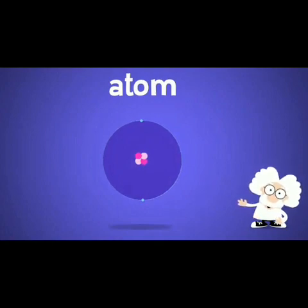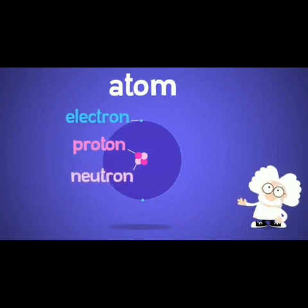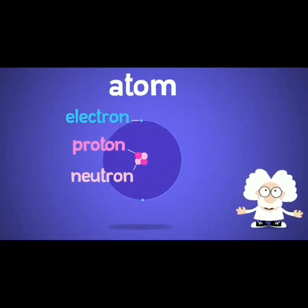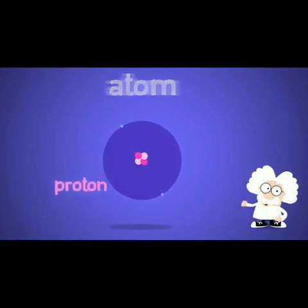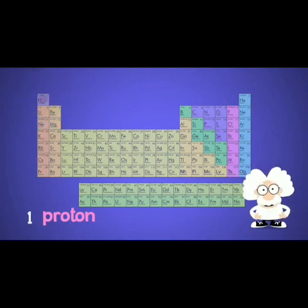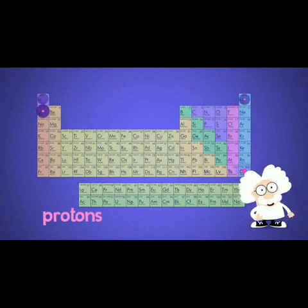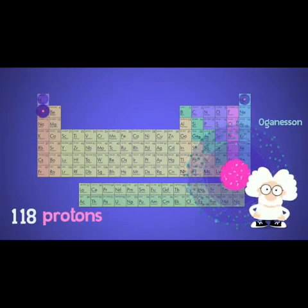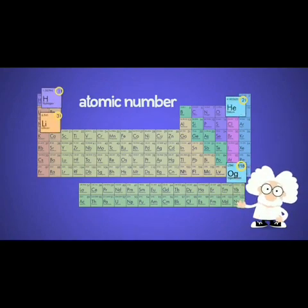As you can see, atoms are made of just three types of tiny particles called protons, electrons, and neutrons, and each of these tiny particles does something special. It is the number of protons inside an atom that makes each element different. If we look at the periodic table, the first element hydrogen has one proton, the second element helium has two protons, and the third element lithium has three protons. This goes all the way up to the 118th element, oganesson, which has 118 protons in its nucleus. The number of protons in an atom is also called its atomic number, which you can see on the periodic table of elements.